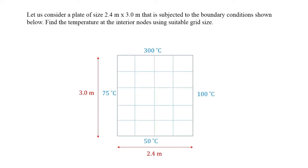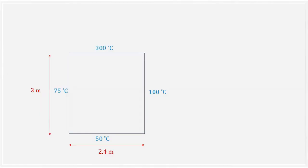First we have to divide the domain into a number of grid points. The temperature of the nodes represented using black color will be determined using the temperature of the red colored nodes. The temperature of the red nodes are provided in the form of boundary conditions. So this is our two-dimensional computational domain along with the boundary conditions.